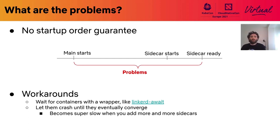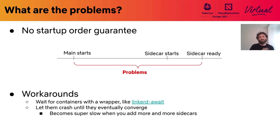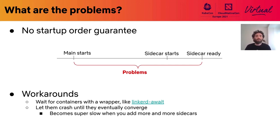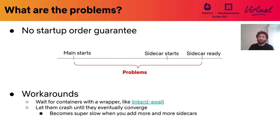One problem that we face today is that there are no startup order guarantees. The main container can be started before the sidecars, and the window between when the main container starts until the sidecar is ready is where problems usually arise. For example, if the sidecar is a service mesh, all network connections will be black-holed until the service mesh container is ready.